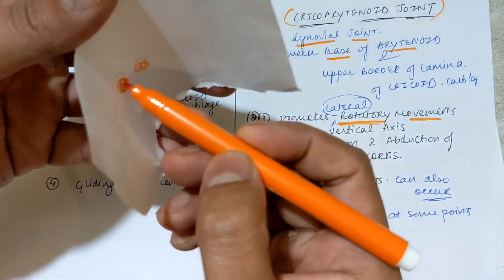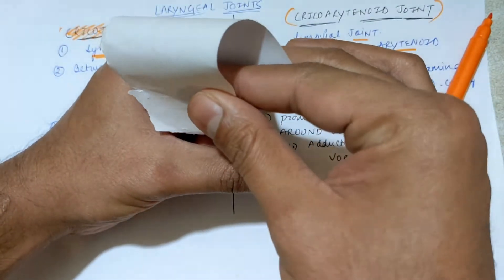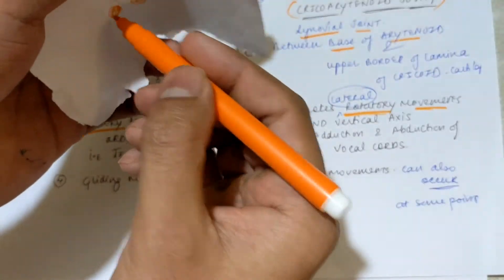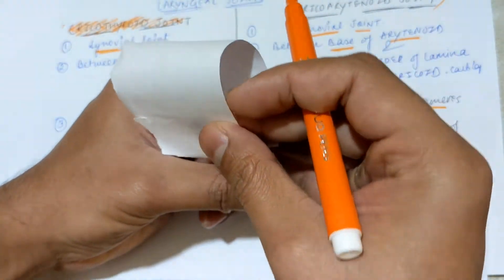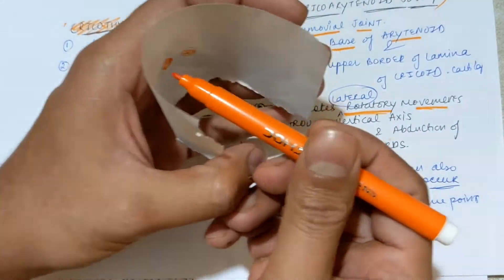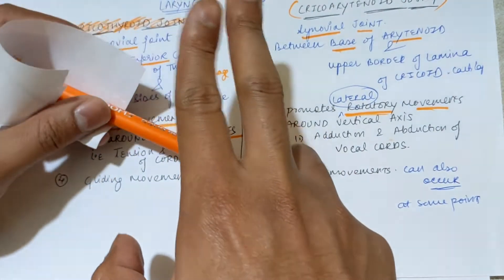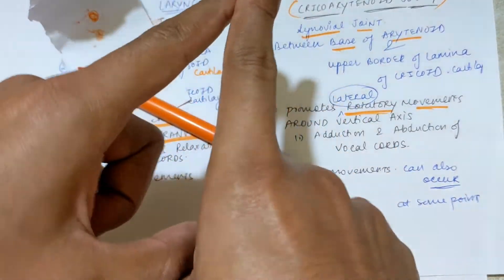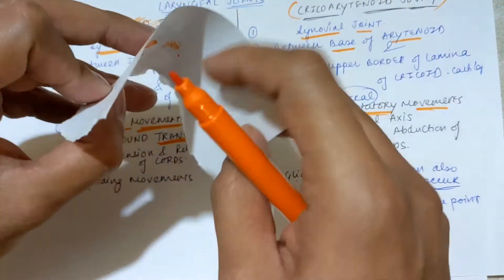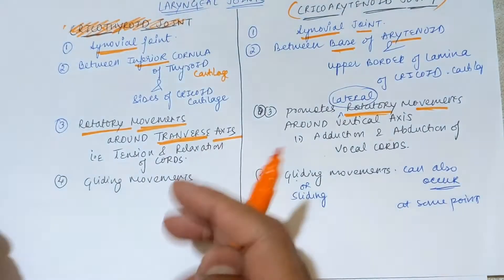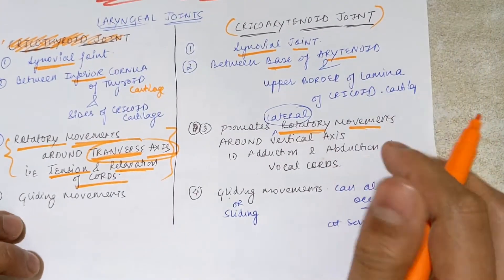The vocal cords are present on the posterior side. When the cricothyroid joint rotates forward, the vocal cords — attached posteriorly — are stretched forward, causing tension. When the joint returns to its normal position, the vocal cords relax. So tension and relaxation of the vocal cords is the function of the cricothyroid joint, occurring through rotation on the transverse axis.